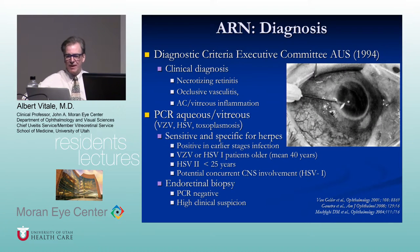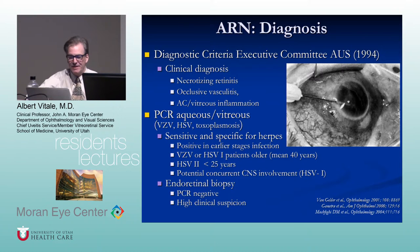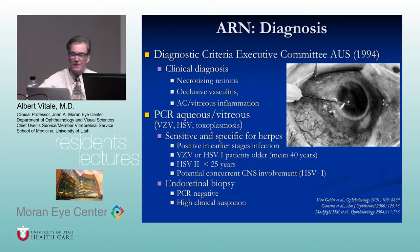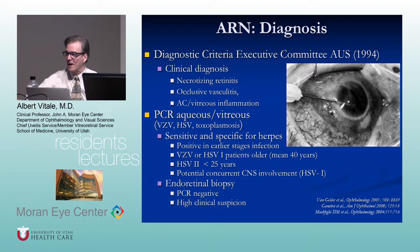PCR is extremely useful, highly sensitive and specific in confirming the diagnosis, but don't wait for results before initiating therapy. It's positive in the earlier stages. Varicella and herpes simplex type 1 occur in older patients (mean age 40); herpes simplex type 2 in younger patients. There is potential for concurrent CNS involvement, particularly with herpes simplex — that can kill the patient. If there is any neurological involvement, get neurology involved and admit for intravenous acyclovir.